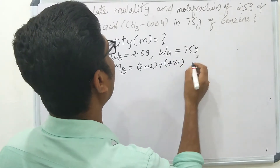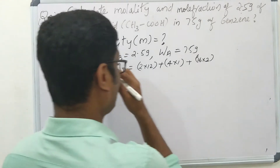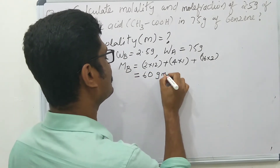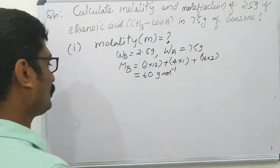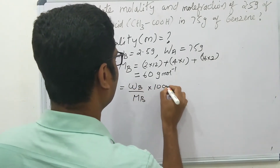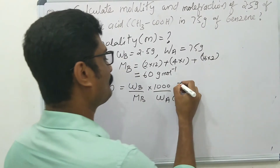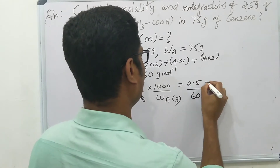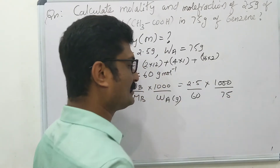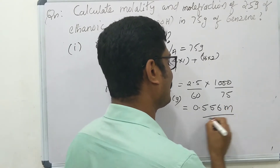The molar mass of CH3COOH is 60 gram per mol. Then molality is equal to (WB / MB) × (1000 / mass of solvent in grams). Substituting values: (2.5 / 60) × (1000 / 75).